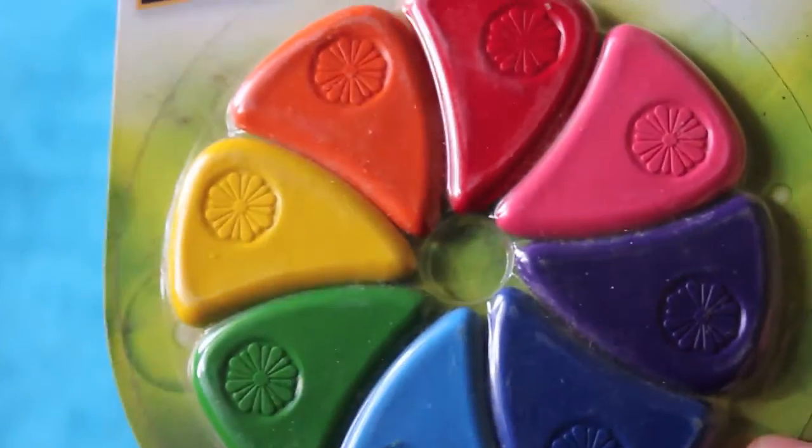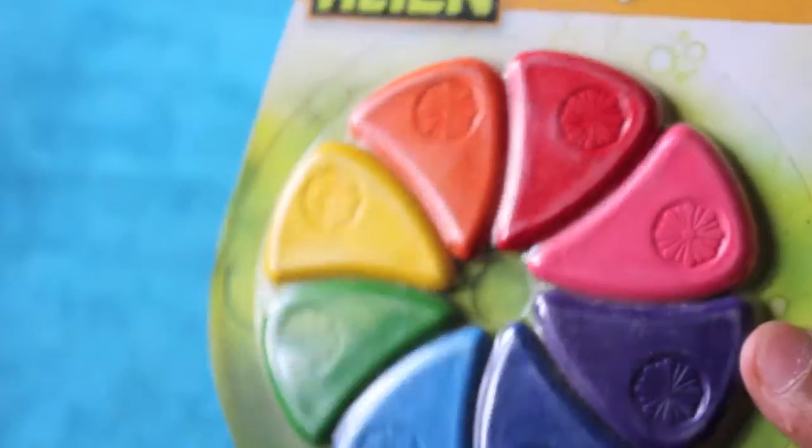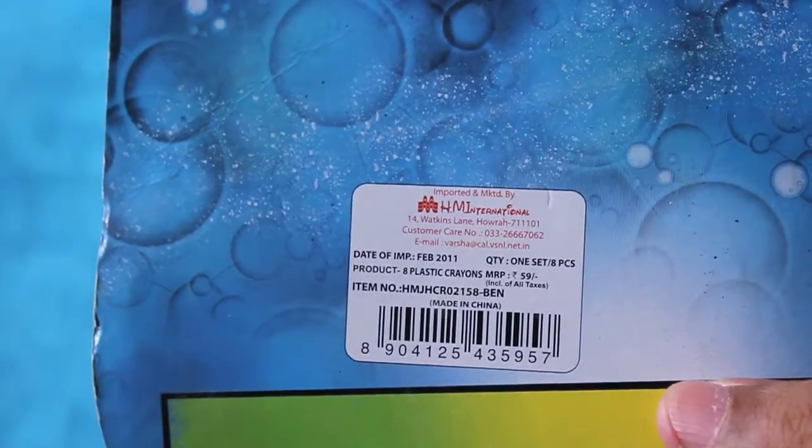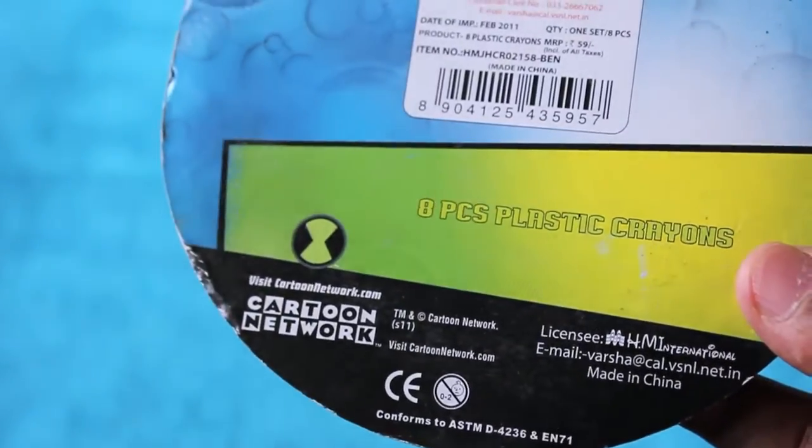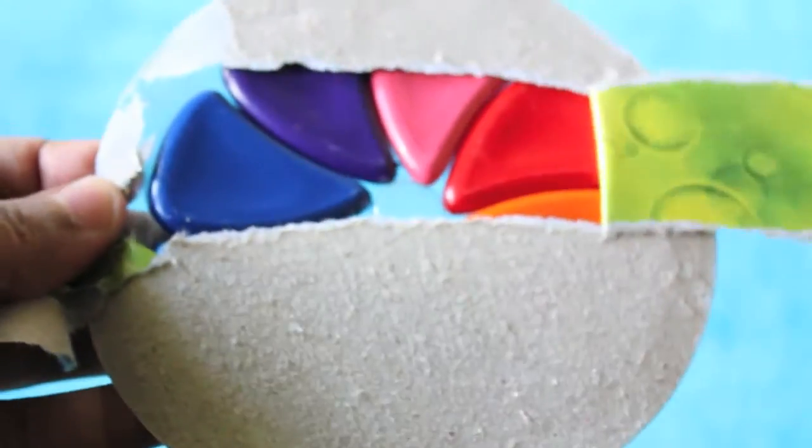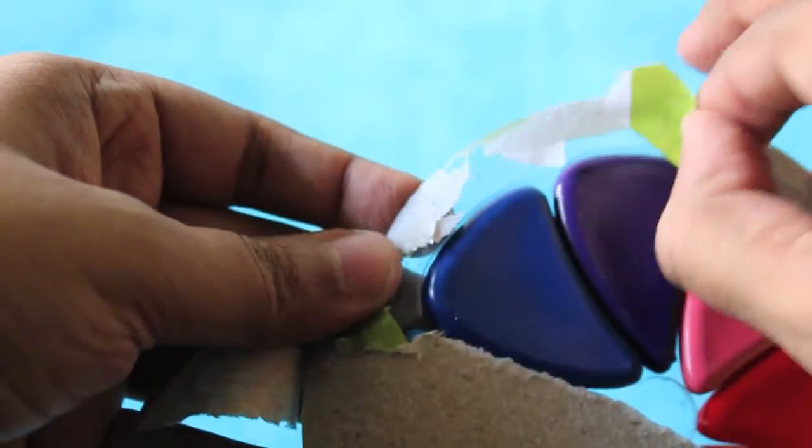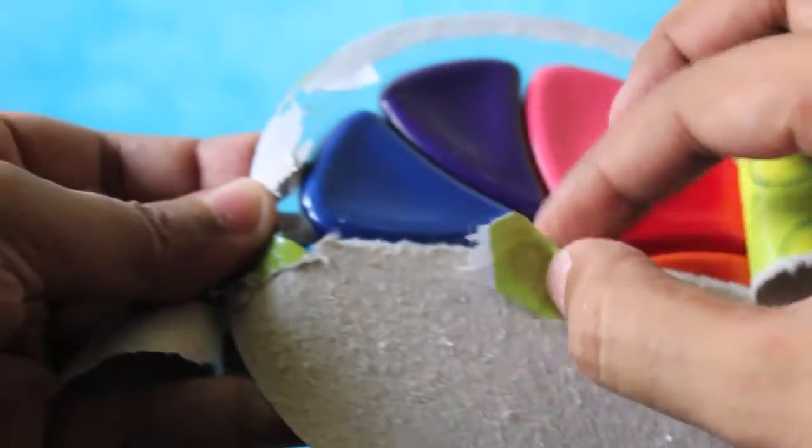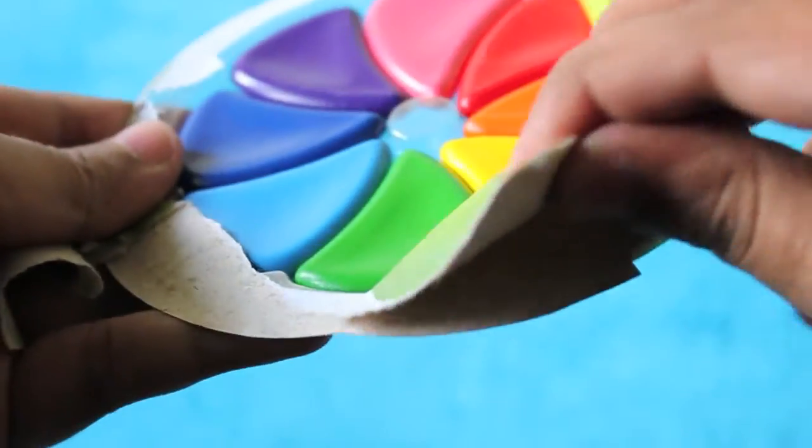Hello guys, let's take a look at these triangular shaped crayons. These are quite uniquely shaped crayons that cost around 60 rupees or around a dollar, and you get about eight color crayons with a quite unique shape. They look...